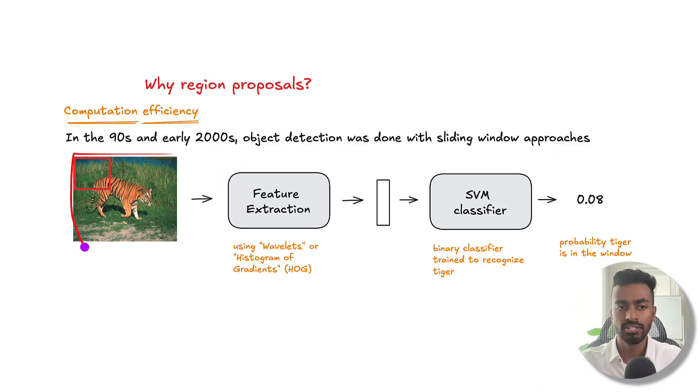You take an image, and then you have a fixed size window indicated by this red box. And for this red box, we are going to extract certain features. At the time, maybe in the 90s it was wavelets, early 2000s it was the histogram of gradients. Just different feature extraction techniques to create this little vector. This could be like 50 floating point numbers to represent this square.